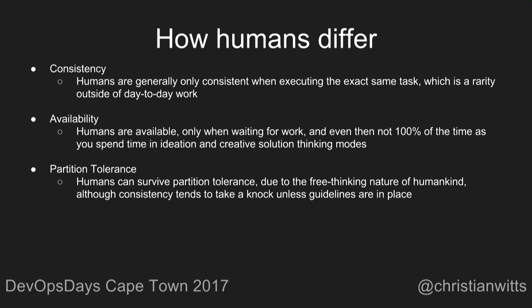Availability is severely hampered when fielding a large volume of work, as context switching for humans is a lot more expensive than for computers. Humans can excel at partition tolerance due to their free-thinking nature, although it can come at a cost of consistency — like doing a YOLO deploy on a Friday evening without going through proper process. In other words, humans are about as reliable as UDP. That is to say, mostly.